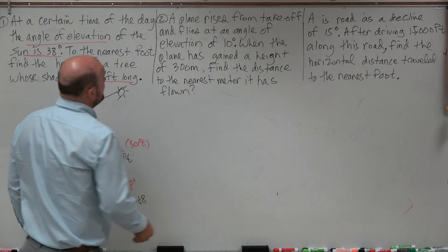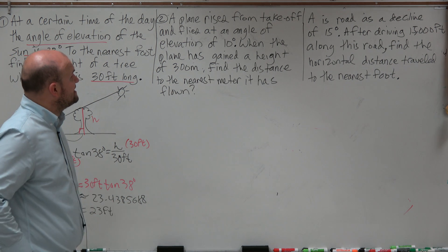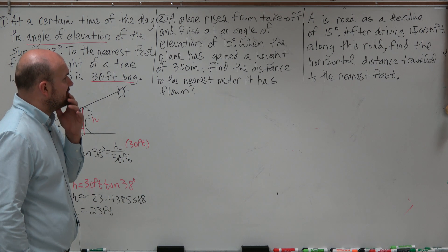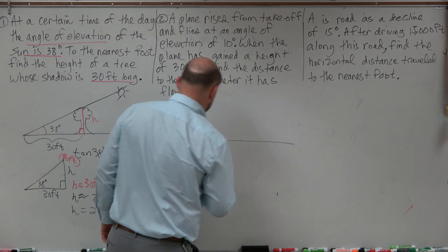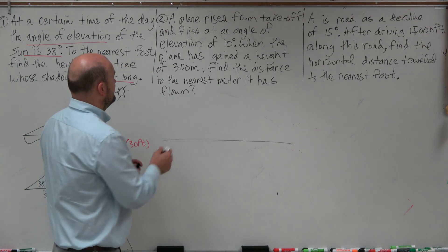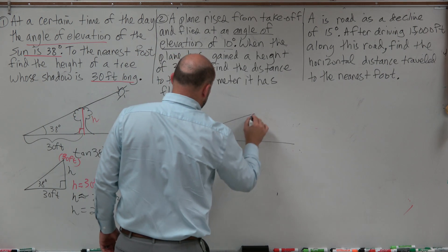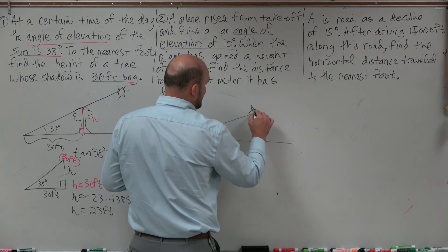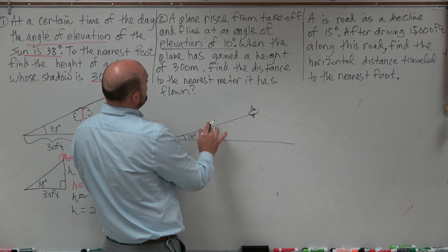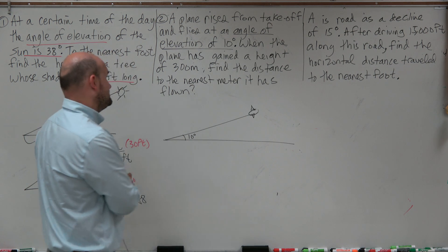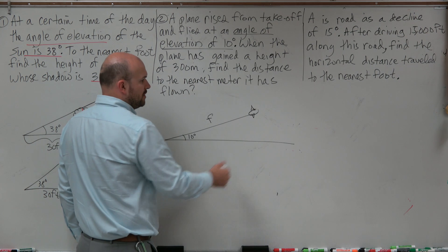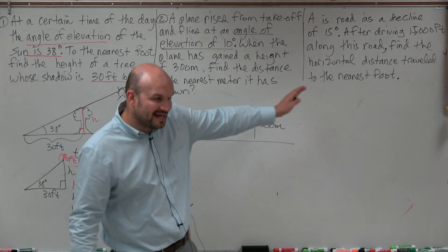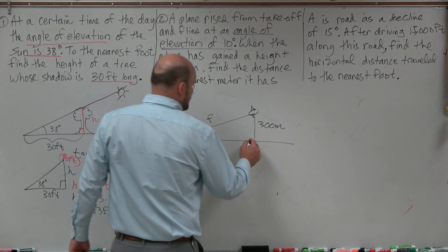The next example: a plane rises from takeoff and flies at an angle of elevation of 10 degrees. When the plane has gained a height of 300 meters, find the distance to the nearest meter it has flown. We draw a horizontal line with 10 degrees angle of elevation. The plane is flying at a direct distance, so we create our right triangle — with 300 meters as the height gained.